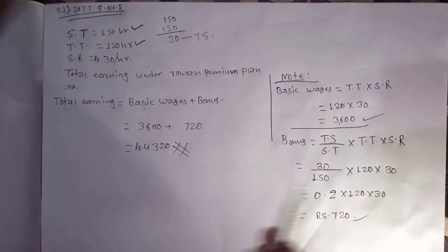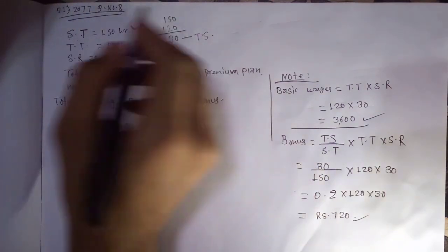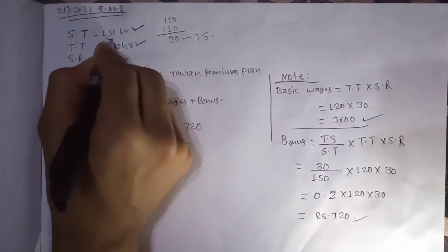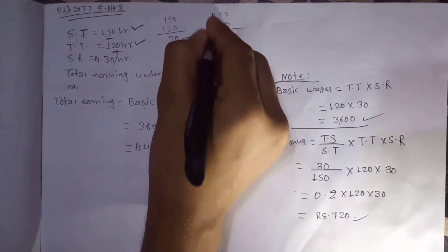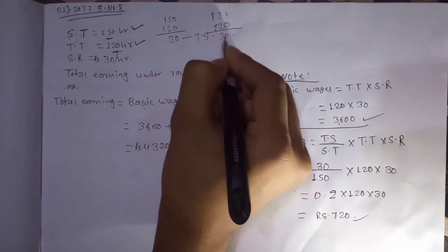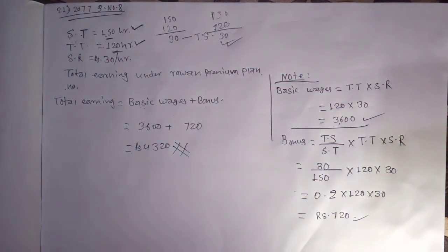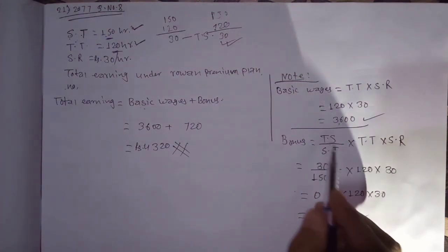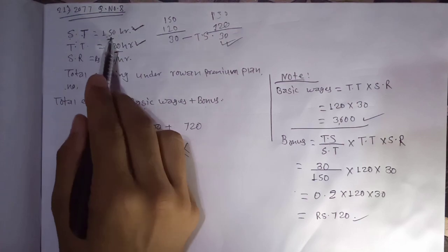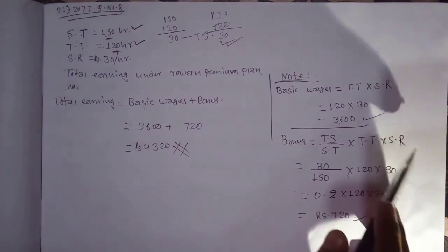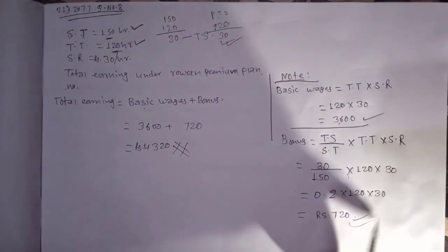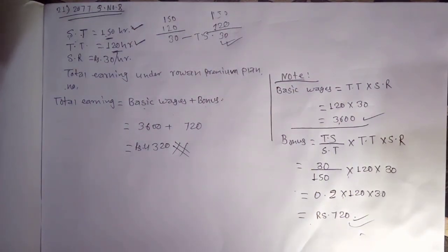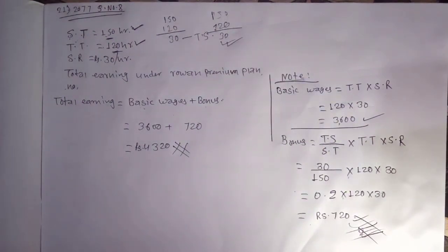This is the formula. We have to calculate the time saved. Time saved equals standard time minus actual time taken. The question is now done.